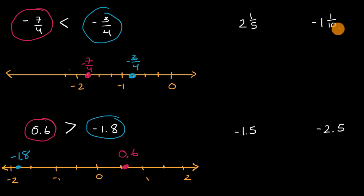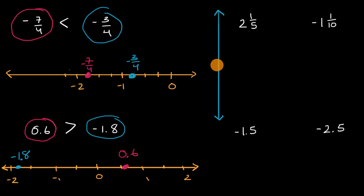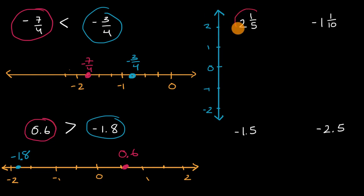Let's do more examples here. I want to show you that the number line does not have to go left-right — it could go up and down. So let's try that. I'll make a vertical line with zero here, positive one, positive two, negative one, negative two. Now, where is two and 1 fifth on the number line? That is positive one, positive two, and then we're going to go about a fifth — so that'll get us roughly right over there.